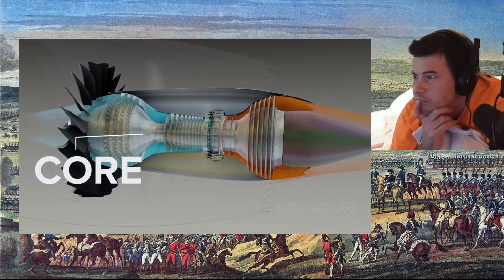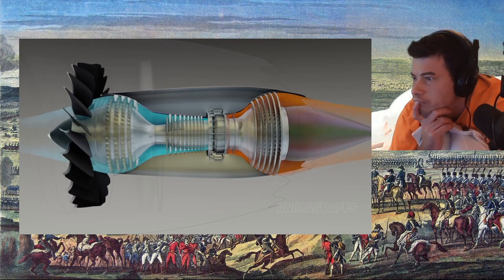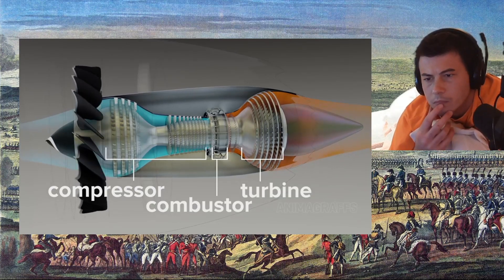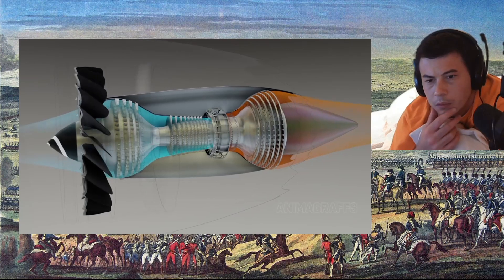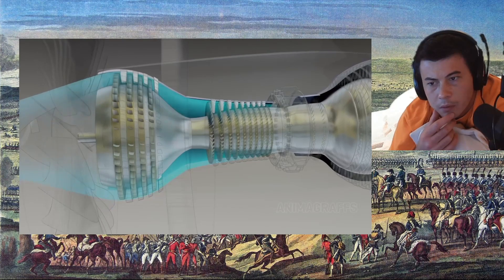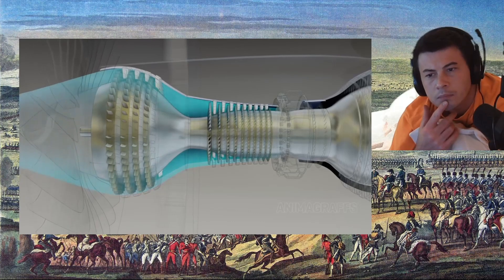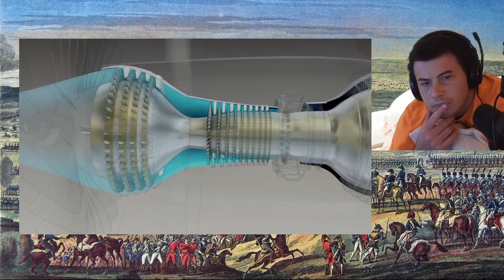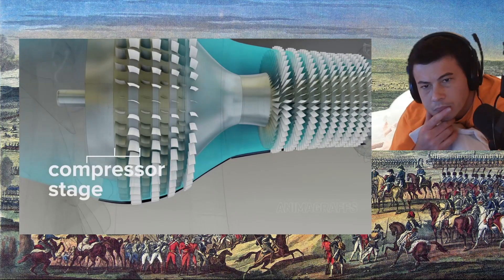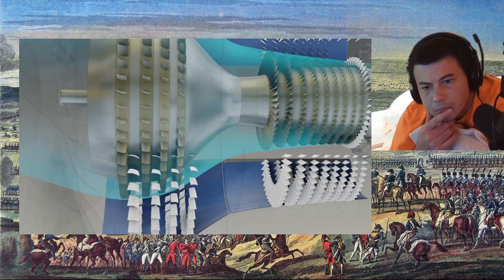The core of a jet engine is a gas generator that creates high-pressure gas to power a turbine. This setup has compressor, combustor, and turbine sections. Compressed air makes for a much more powerful combustion reaction relative to engine size. Compression happens in stages that force incoming air into an increasingly narrow chamber. A single compressor stage is comprised of a spinning rotor paired with a ring of stationary stator vanes, which are attached to the core casing.